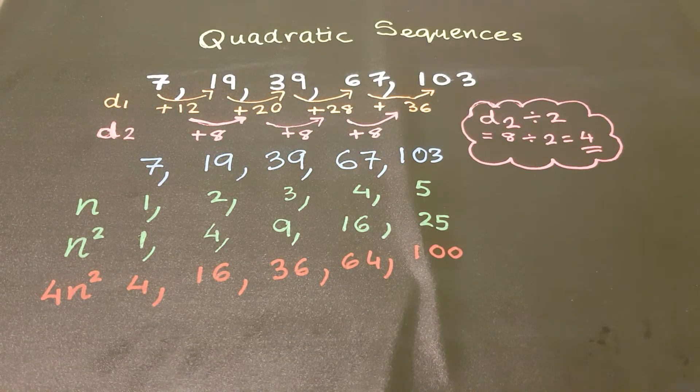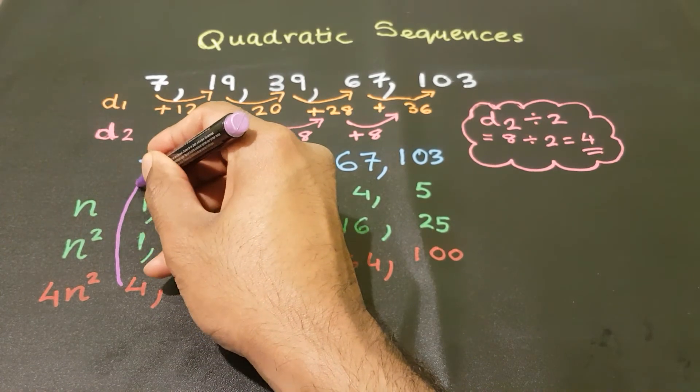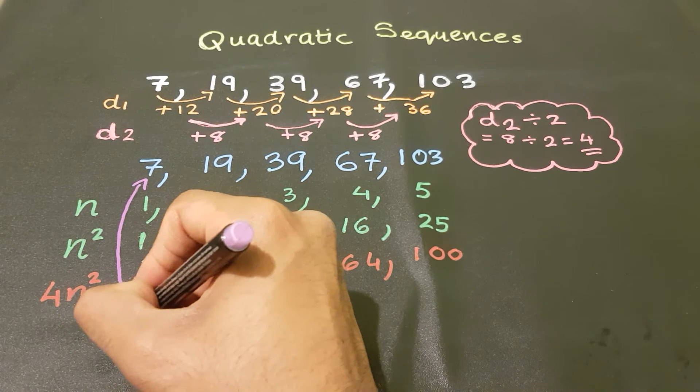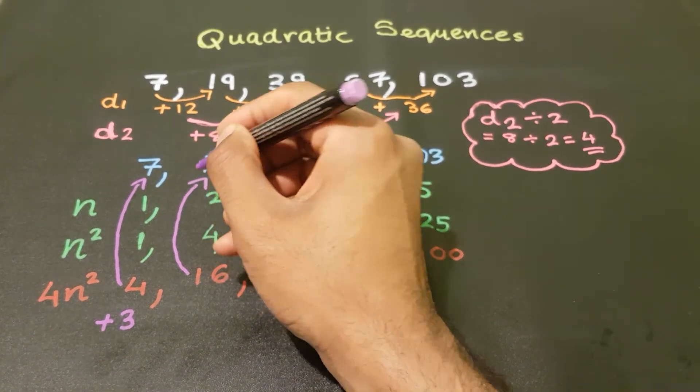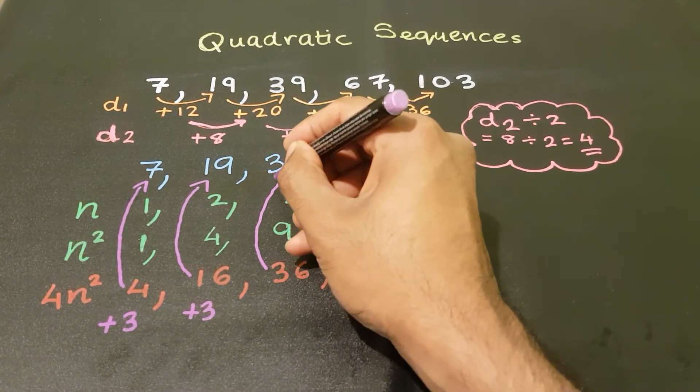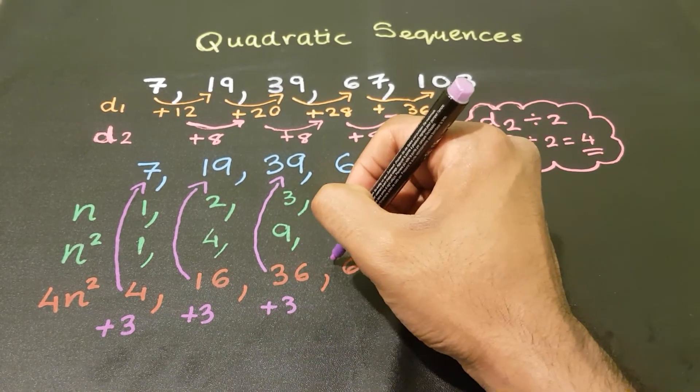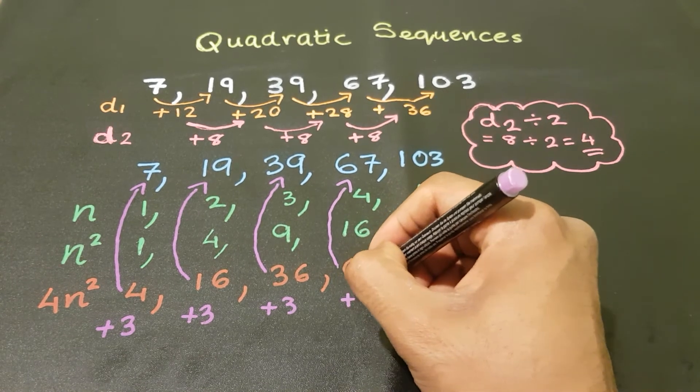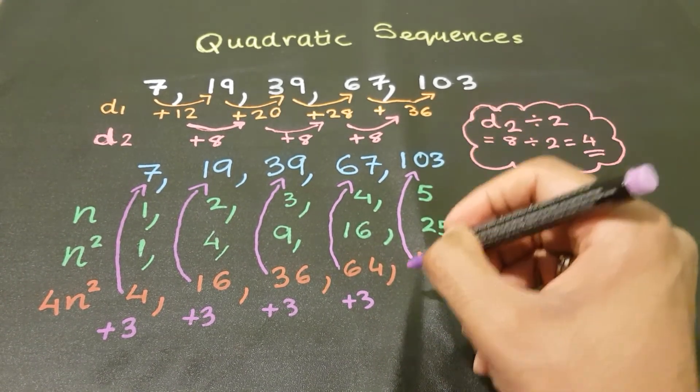And the next thing I need to do is to check how I go from this 4 to that 7. In this case, I just have to add 3. Then 16 all the way to 19, add 3. And 36 to 39, add 3. And 64 to 67, add 3. And 100 to 103, again add 3.